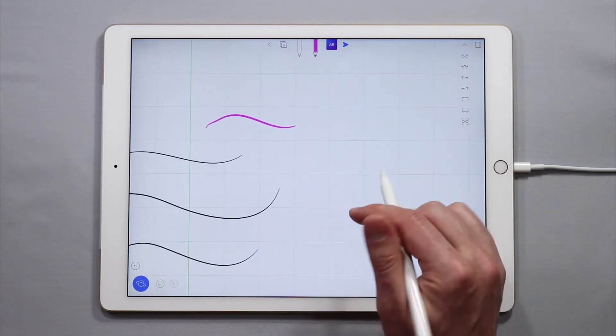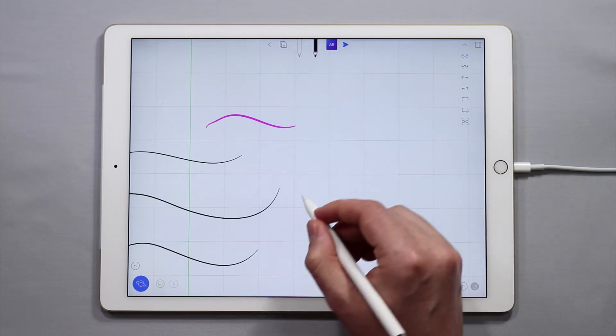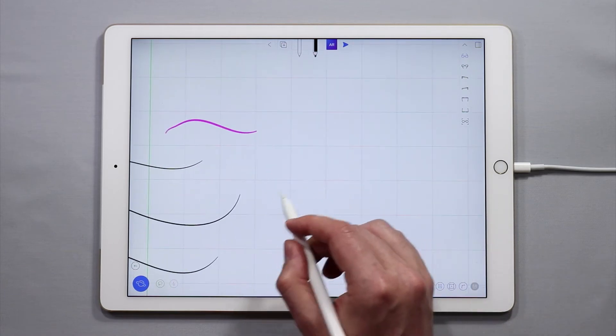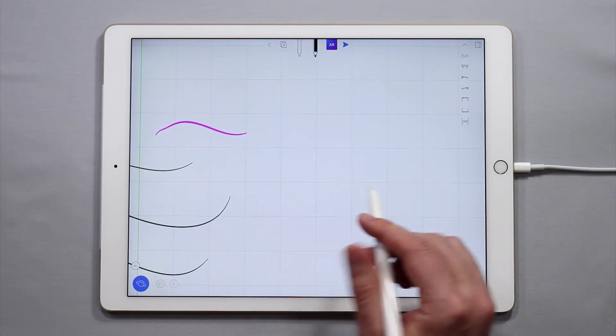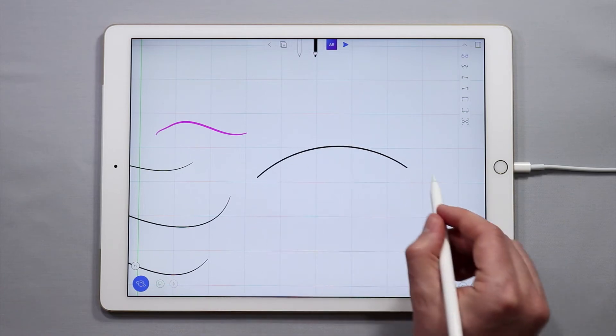Another cool feature within UMake is the autocorrect feature. Now when you're drawing NURBS curves, UMake assumes that you're trying to make precision shapes that are relatively smooth. If I draw an arc for example, UMake is going to try and correct that arc.